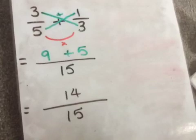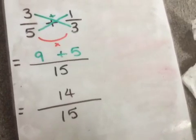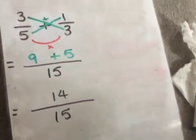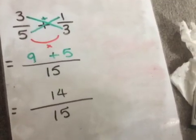We can't simplify it any further because it is not on the same times table, so therefore our answer to 3 fifths plus a third is 14 over 15.